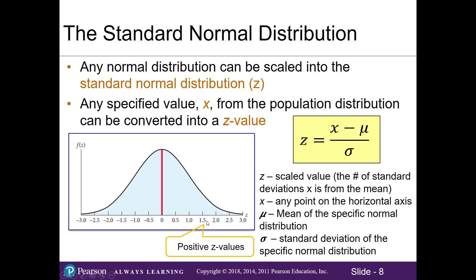Once we convert our x's into z values, note that on the right side our z values are positive because they are above the mean, and on the left our z values are negative because these are below the mean. Essentially, whatever our mean is — maybe 100, 95, or 23 — by converting it into a z value we simplify it and change that mean into zero. Any particular x value we're interested in will be converted to a z value representing how many standard deviations away it is from the mean.